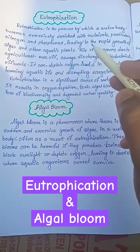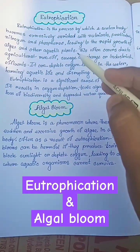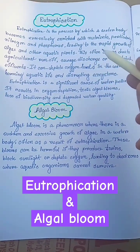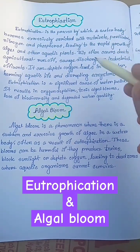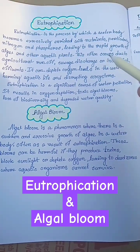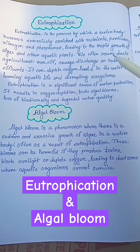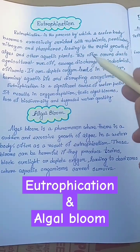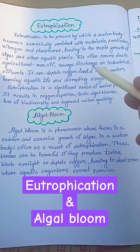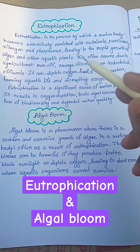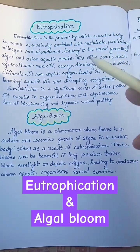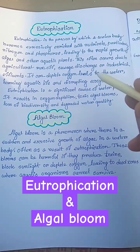Hello students, welcome back. In this video we will know two very important terms of ecology which are eutrophication and algal bloom. Eutrophication is the process by which a water body becomes excessively enriched with nutrients, particularly nitrogen and phosphorus, leading to the rapid growth of algae and other aquatic plants.